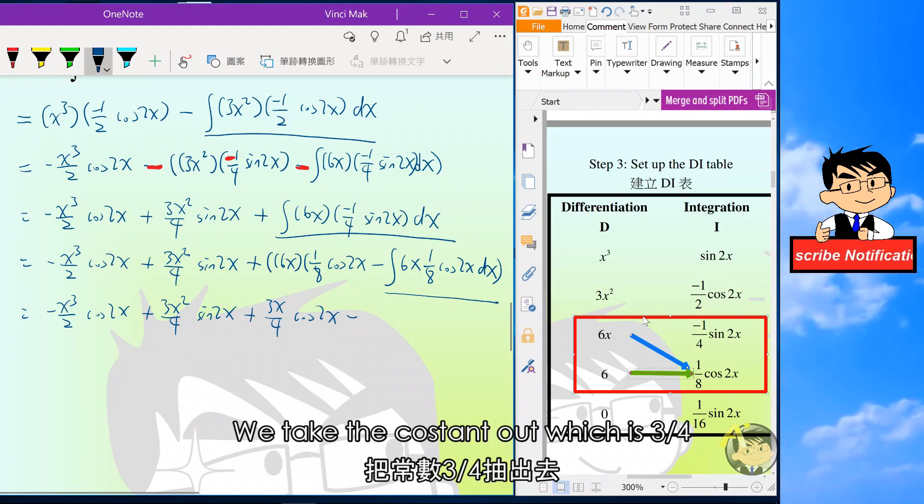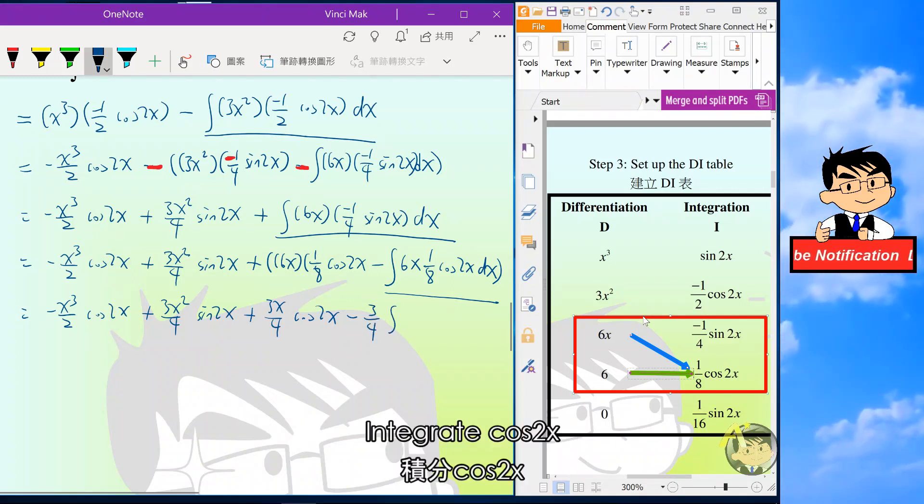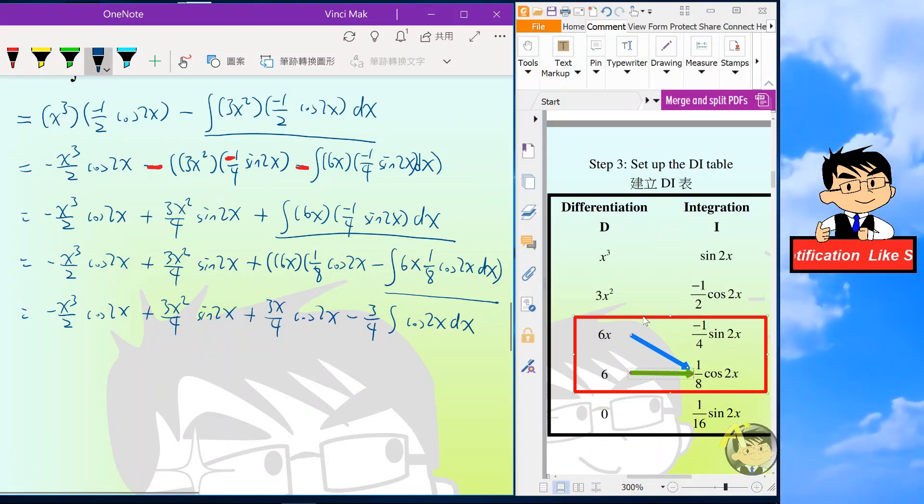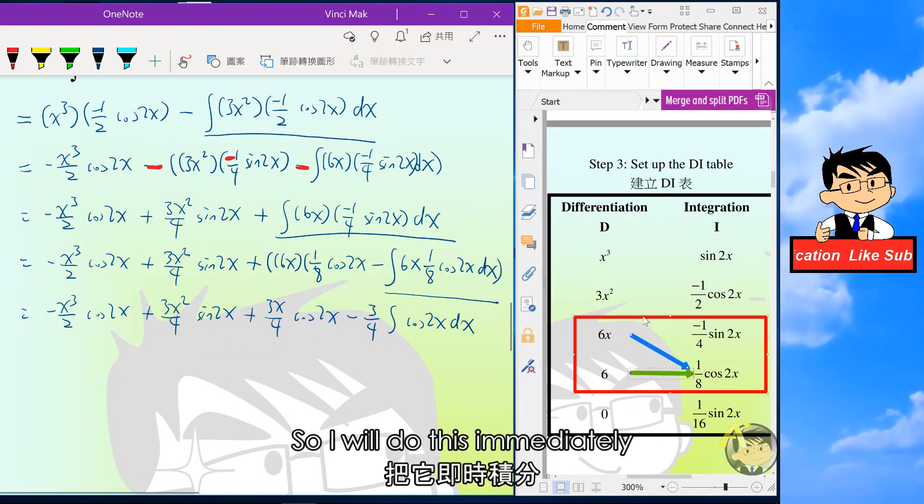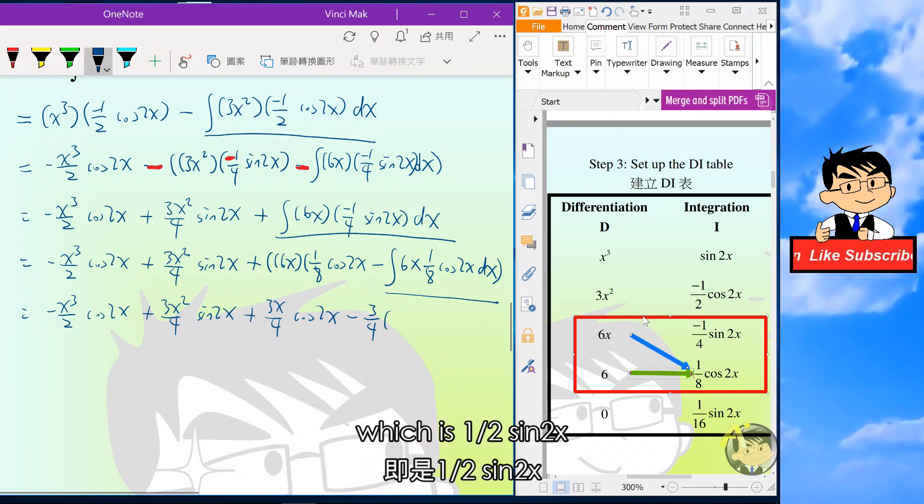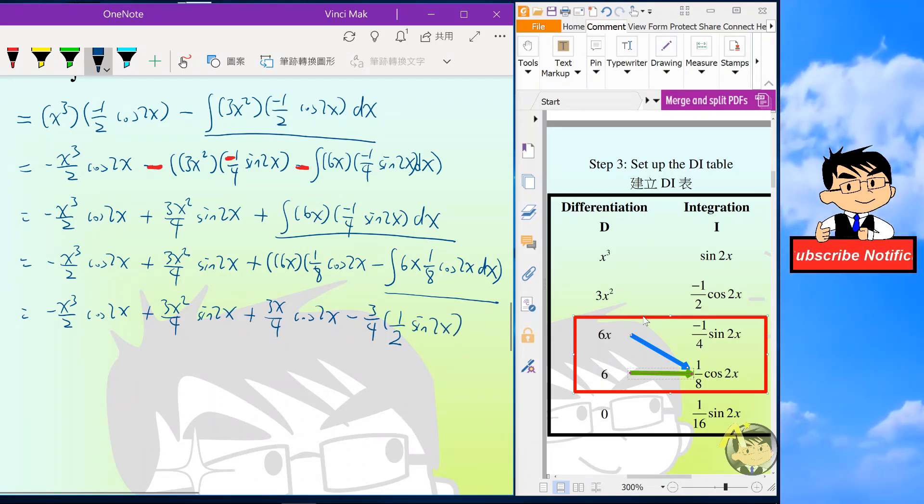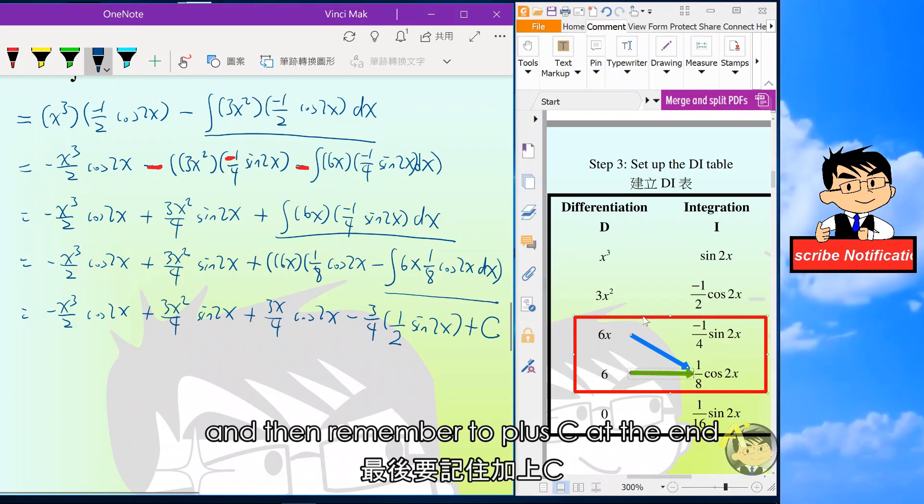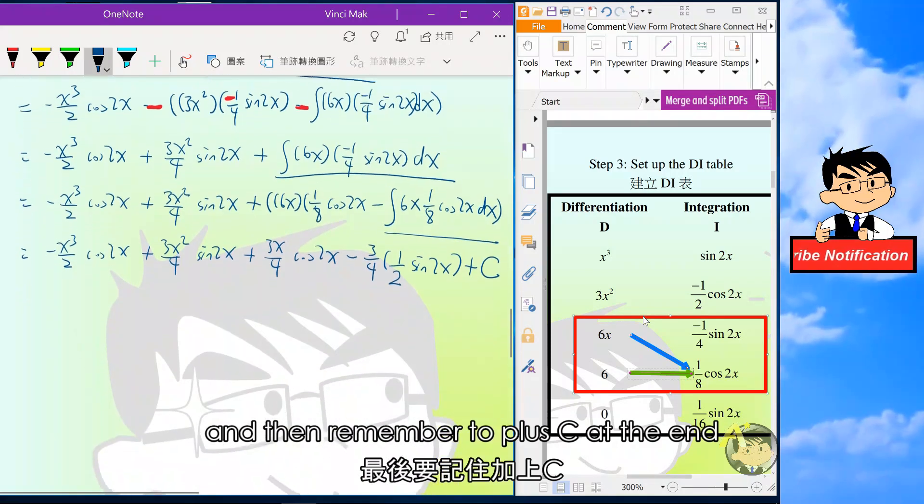We take the constant out, which is 3 over 4, so I'll do this immediately, which is half sine 2x, and then remember to plus C at the end.